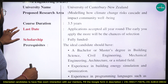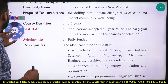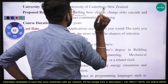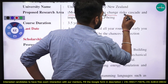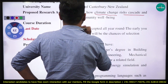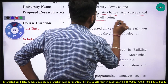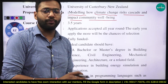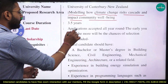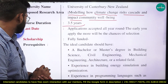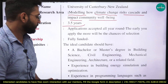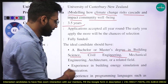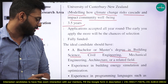Next we have the University of Canterbury in New Zealand. The proposed research area is modeling how climate change risks cascade and impact community well-being. The course duration is 3.5 years, and the prerequisites are bachelor's or master's degrees in building science, civil engineering, mechanical engineering, architecture, or related fields.